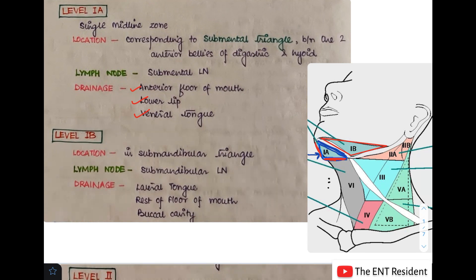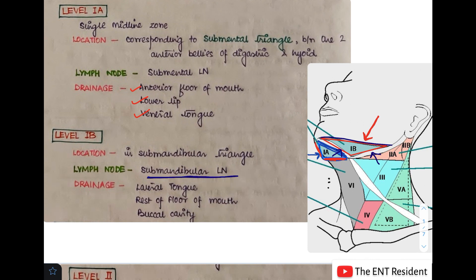Level 1B is located in the submandibular triangle, bounded by the anterior belly of the digastric, the posterior belly of the digastric, and the lower border of the mandible. These three structures form the submandibular triangle and contain the submandibular lymph node. Level 1B drains the lateral aspect of the tongue, the rest of the floor of the mouth, and the buccal cavity — as opposed to level 1A which drained the anterior floor of the mouth and ventral tongue.